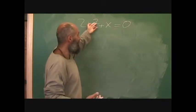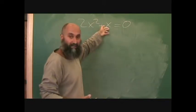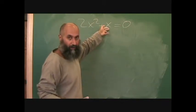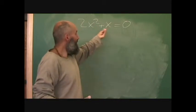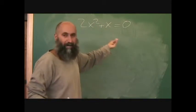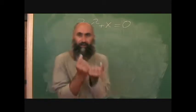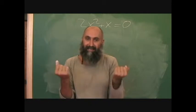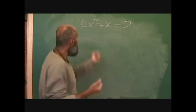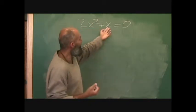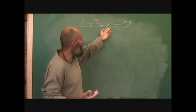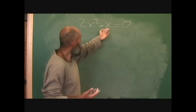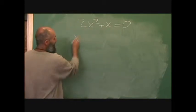You couldn't take out an x squared because that doesn't have two x's. You can only take out the weakest link in the chain — the smallest link. So you can't take out anything more than this. Right now, you can factor out an x.